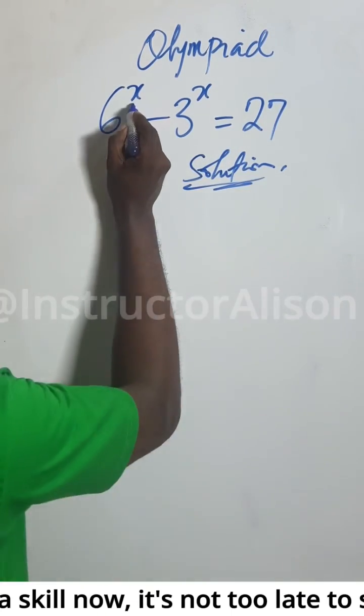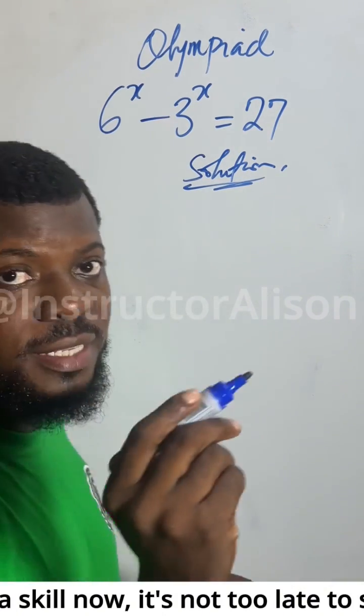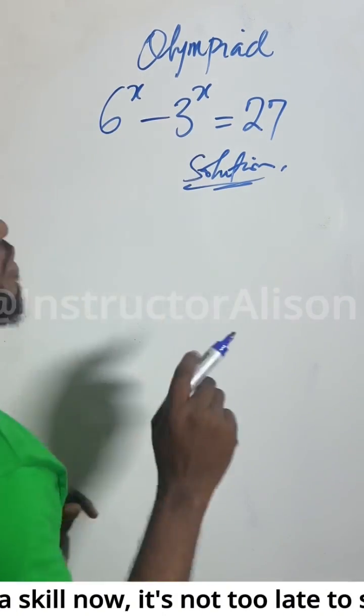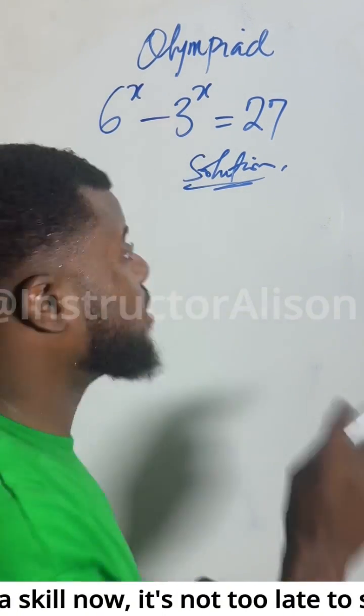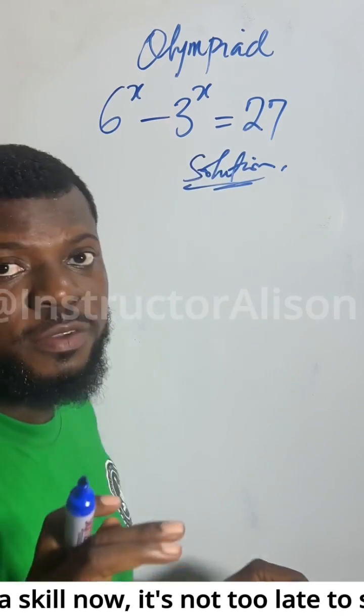Now if I carry to put here, I carry to put here: 6 squared gives me 36, 3 squared gives me 9, 36 minus 9 gives me 27.